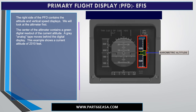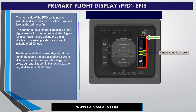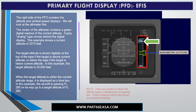The right side of the PFD contains the altitude and vertical speed displays. The center of the altimeter contains a green digital readout of your current altitude. A gray analog tape moves behind the digital display. This example shows a current altitude of 2,310 feet. The target altitude is shown digitally at the top of the tape if the target is above the current altitude, or below the tape if the target is below. In this example, the target altitude is 20,000 feet. When the target altitude is within the current altitude range, it is displayed as a blue box. In this example, the aircraft is passing flight level 285 on its way up to a target altitude of 2,910.